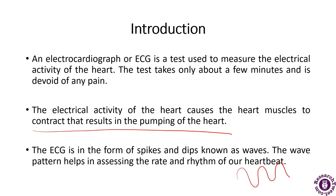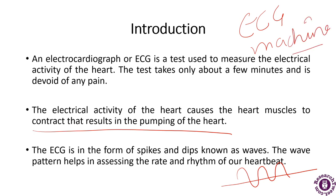The ECG waves help in assessing the rate and the rhythm of a heartbeat. The human heart produces an electrical impulse by itself, and as this electrical impulse passes through the heart, it generates an electric current that spreads over the body and reaches the skin. When the patient is connected to the ECG machine, there will be three electrical leads — one each to both wrists and the third to the left ankle — used to monitor the activity of the heart. This is the standard ECG testing.